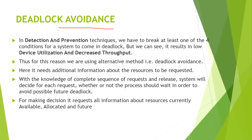So why do we need deadlock avoidance? The simple answer is that detection and prevention techniques were not that useful or efficient. As we had seen in hold-and-wait and no-preemption techniques, there is a problem of low device utilization and decreased throughput. Because of these two conditions, we have to opt for deadlock avoidance.